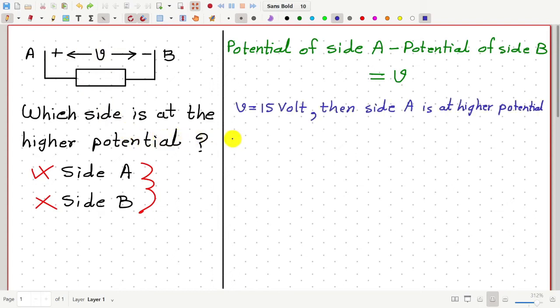Now, suppose if V is 15V for example, then of course side A will be at the higher potential.